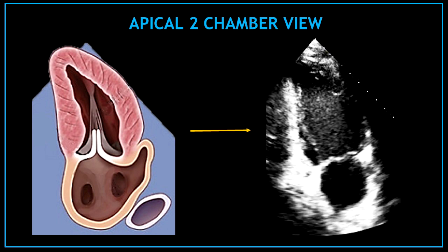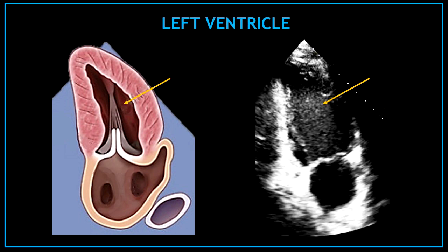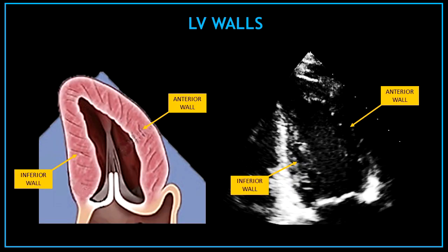Now let's continue with our next view. I'm going to show you all the structures visualized in the apical 2 chamber view. This is the apical 2 chamber view and I can say this is the most simple view from all the apical views. Like the name of the view, only two chambers are visualized in this view. On the top, we have the left ventricle. Two left ventricular walls can be seen in this view: on the left hand side we have the inferior wall and on the right hand side we have the anterior wall.